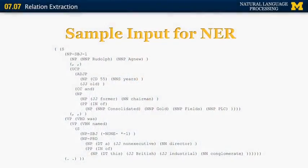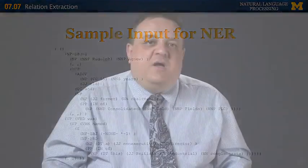Here's a simple sample input format for named entity recognition. This is a parsed sentence on the Penn Treebank. Rudolf Agnew, 55 years old and former chairman of Consolidated Goldfields PLC, was named a non-executive director of this British industrial conglomerate. The example output that I'm going to show you is in the so-called IOB format. This is a very common format in many different natural language processing tasks, including part of speech tagging, named entity recognition, semantic role labeling.